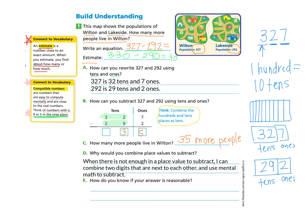We can explain that when there's not enough in a place value to subtract, I can combine two digits that are next to each other and use mental math to subtract. Part E, how do you know if your answer is reasonable? We did an estimation in the beginning and we found that our estimation was 40. The real answer we found is 35 more people. My answer is reasonable because 35 is close to my estimate of 40, which I found by rounding to the nearest 10.